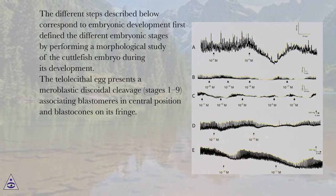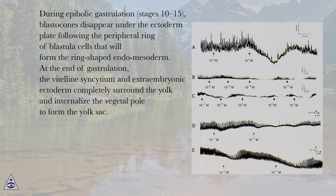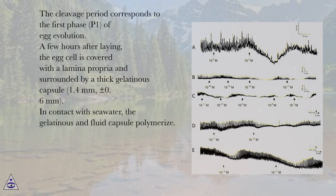The telolecithal egg presents a meroblastic discoidal cleavage (stages 1 to 9), associating blastomeres in central position and blastocones on its fringe. During apobolic gastrulation (stages 10 to 15), blastocones disappear under the ectoderm plate following the peripheral ring of blastula cells that will form the ring-shaped endomesoderm. At the end of gastrulation, the vitelline syncytium and extraembryonic ectoderm completely surround the yolk and internalize the vegetal pole to form the yolk sac. The cleavage period corresponds to the first phase, P1, of egg evolution.